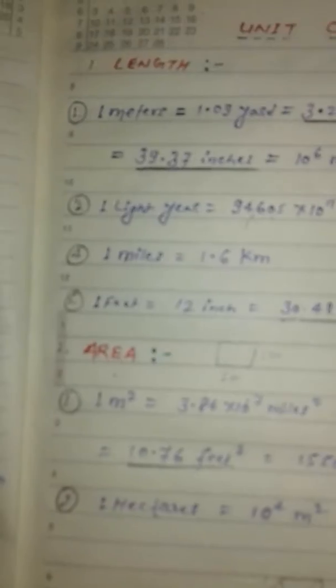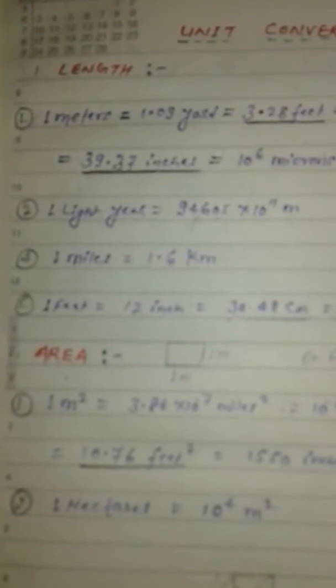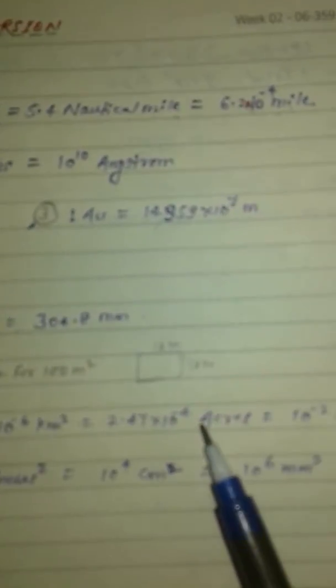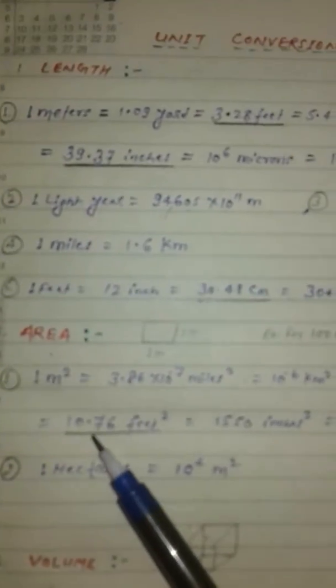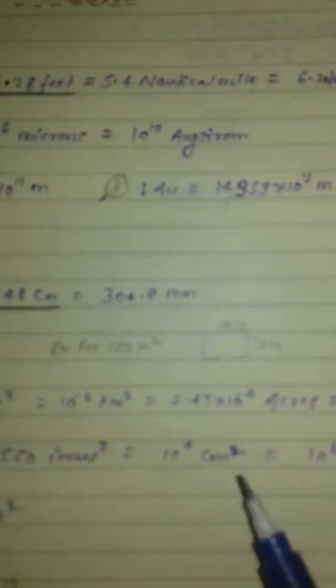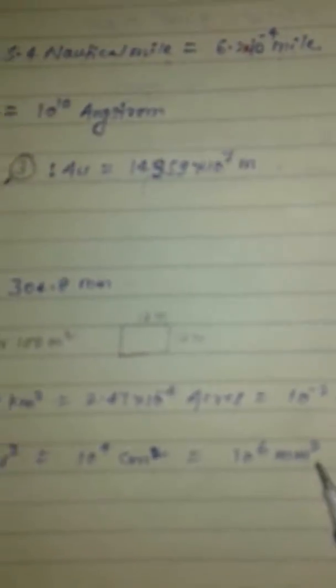Which is 2.47 x 10 to the power minus 4 acres, 10 to the power minus 4 area, 10.76 feet square, 1550 inches square, 10 to the power 4 centimeter square, and 10 to the power 6 millimeter square.